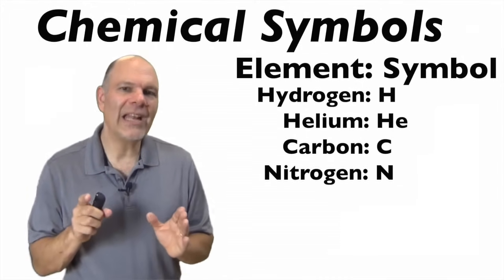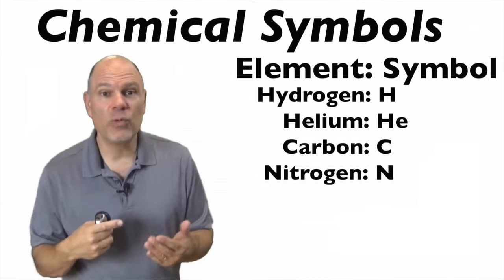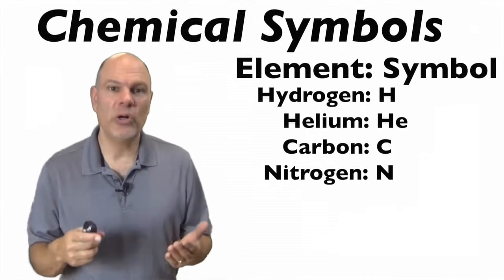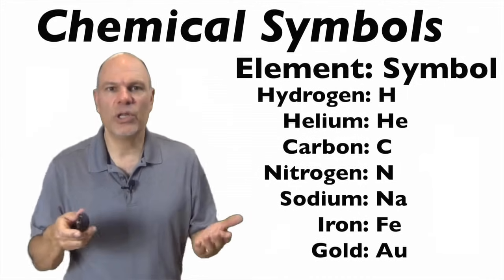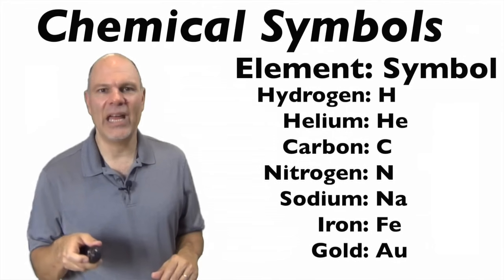There are some atoms, however, that have chemical symbols that are not derived from English. So, for example, sodium is Na, iron is Fe, gold is Au. You'll learn this in the course of your studies of biology and chemistry.